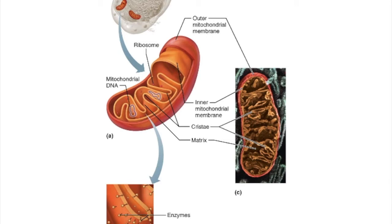Let's discuss the mitochondria, probably the best known organelle. The word organelle means tiny organ. There are structures within the cell that do things — that have particular roles to keep the cell going the way it needs to go. Probably the best known organelle is the mitochondrion, nicknamed the powerhouse of the cell. As you can see, it's a membranous organelle and its job is to produce most of the ATP for a cell.